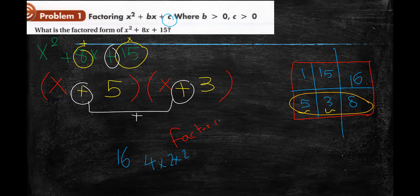Is it clear? I'll give another example. Be careful — I want only two numbers as a pair. For example, if you have 16, don't say 4 times 2 times 2. I want only two numbers that, if you multiply them, you get the constant, and if you add them, you get the coefficient of the middle term.